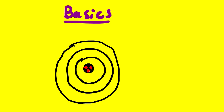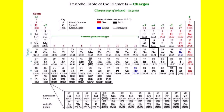Each element's atomic structure depends on its atomic number. Looking at the periodic table, we can see it consists of elements with symbols and numbers. The number on top of each element's symbol is the atomic number, and the number below is the atomic mass. For example, for hydrogen, the atomic number is on top and the atomic mass is below.